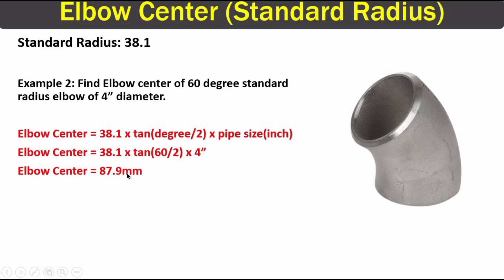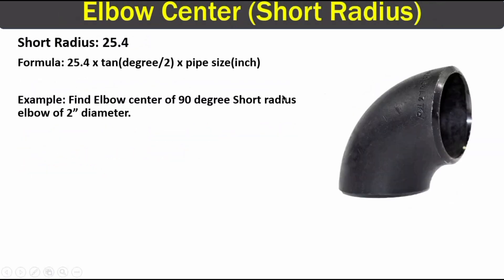Now moving on to our second type of elbow: the short radius elbow. If you have any short radius elbow in your drawing, you can find the elbow center using this formula: 25.4 multiplied by 10, into degree divided by 2, multiplied by pipe size in inches. This is the same formula as before, with only the difference that we have 25.4 rather than 38.1.